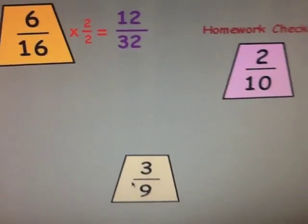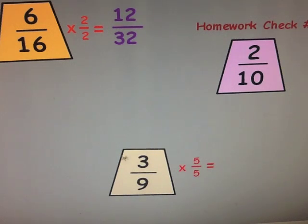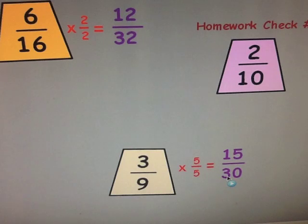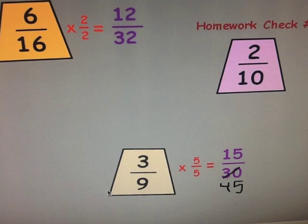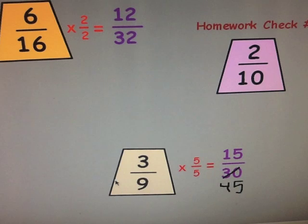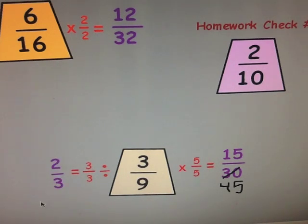Next example is three-ninths. Let's multiply by five over five — multiply both the numerator and the denominator by five. Three times five is fifteen, and nine times five is forty-five. Now let's divide — is there a factor that goes into both three and nine? Yes, it's three. We can divide both numerator and denominator by three, and it gives us one-third. So one-third is equivalent to three-ninths, and fifteen-forty-fifths is also equivalent to three-ninths.